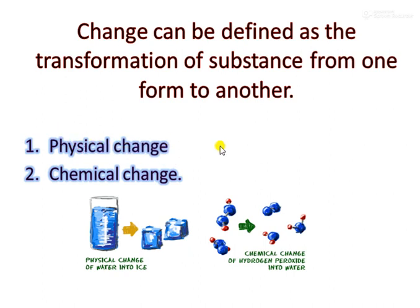In a physical change, no new substance is formed after the change. Changes in which new substances are formed are called chemical change. In the process of chemical change, the thing which forms after the change will have different properties from the original substance.